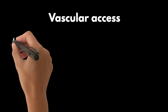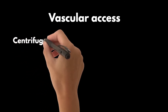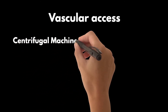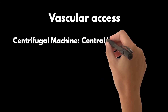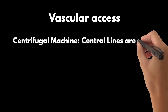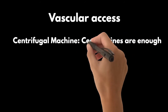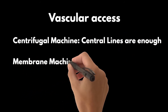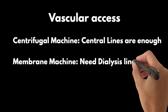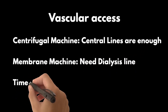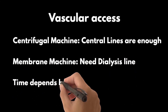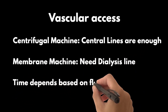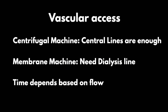The vascular access required for the procedure: for centrifugal machines, a normal 7 French central line is enough. For membrane machines, a dialysis line is required. Time of procedure depends on flow, and thus centrifugal machines take more time.